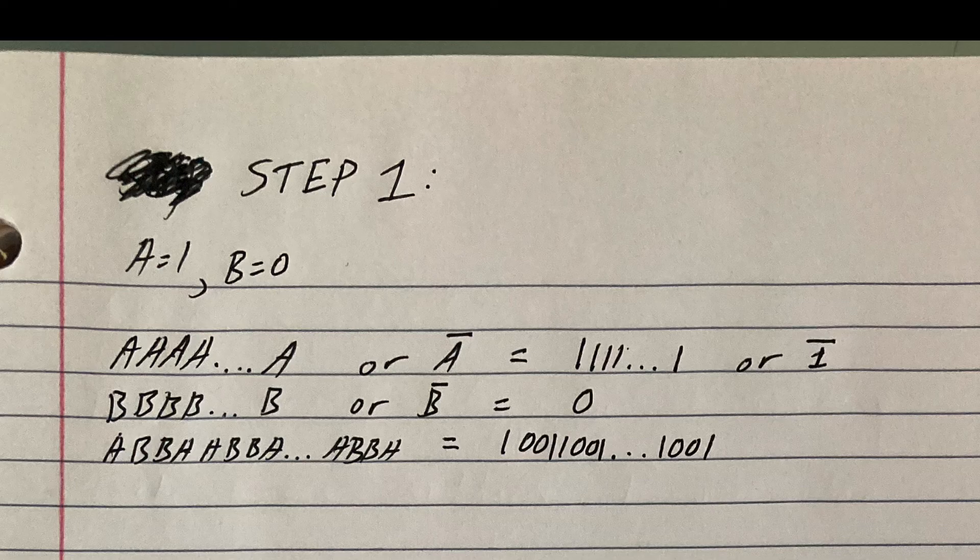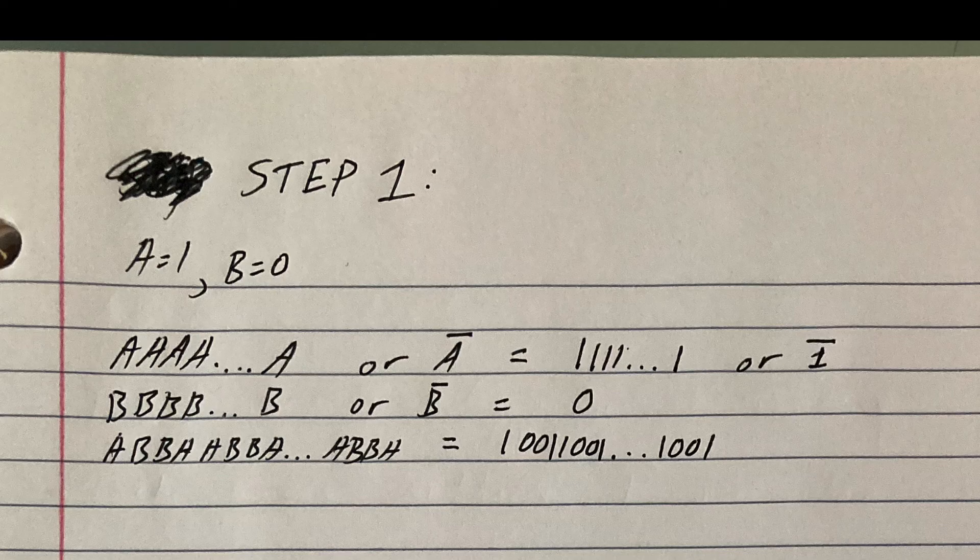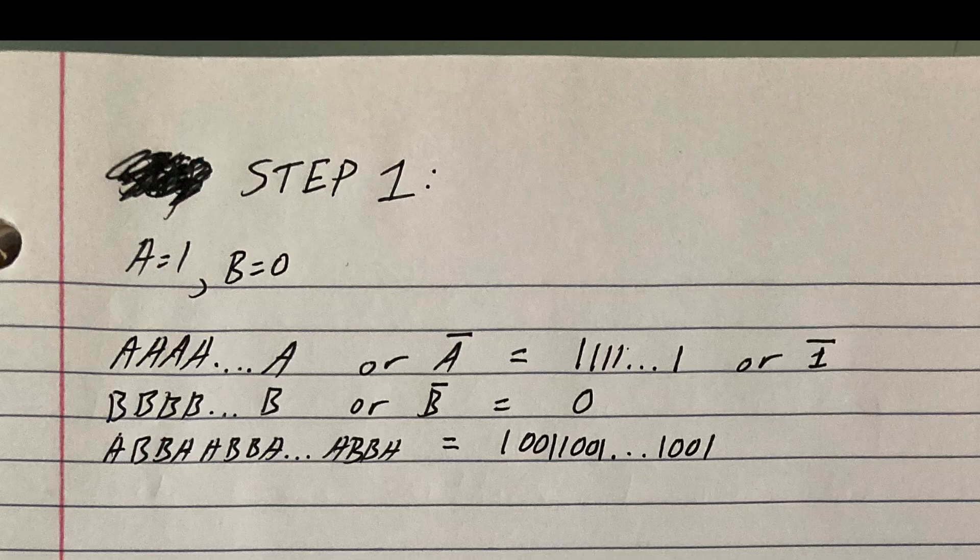So to start with, everyone's name is just a bunch of A's and B's in an infinite sequence. And it's every single possible one, so it ranges from all A's to all B's and everything in between. So you just start by telling everyone, take your name and switch it into a binary number, so A equals 1, B equals 0. That way, every single person's name will just be all 1's and 0's, and it'll range from infinite 1, which is the highest number, to infinite 0, or just 0, which is the lowest number.